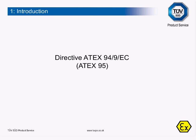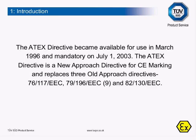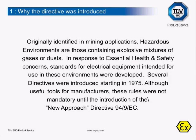The ATEX Directive, or the Product Directive 94/9/EC, also called ATEX 95, became available for use in March 1996 and mandatory on July 1, 2003. The ATEX Directive is a New Approach Directive for CE marking and replaces three old Approach Directives. Originally identified in mining applications, hazardous environments are those containing explosive mixtures of gases or dust. In response to health and safety concerns, standards for electrical equipment intended for use in these environments were developed. Several directives were introduced starting in 1975 and were useful tools for manufacturers, but these rules were not mandatory until the introduction of the New Approach Directive.